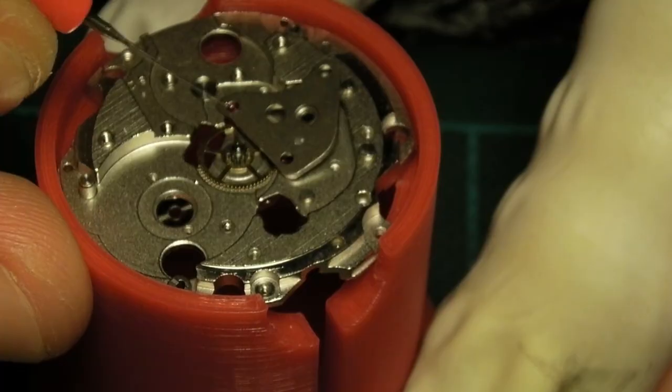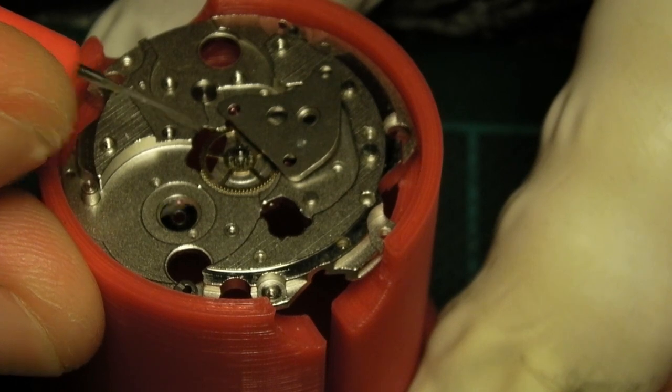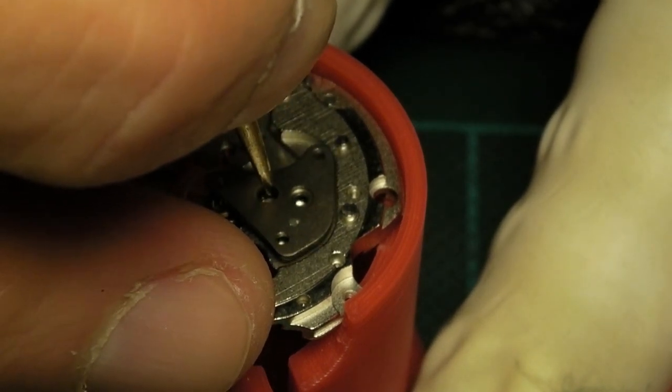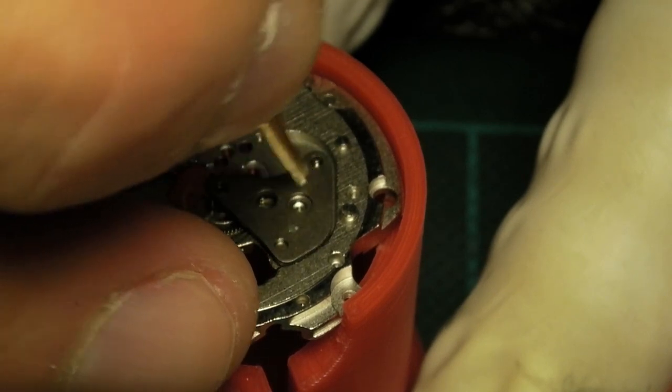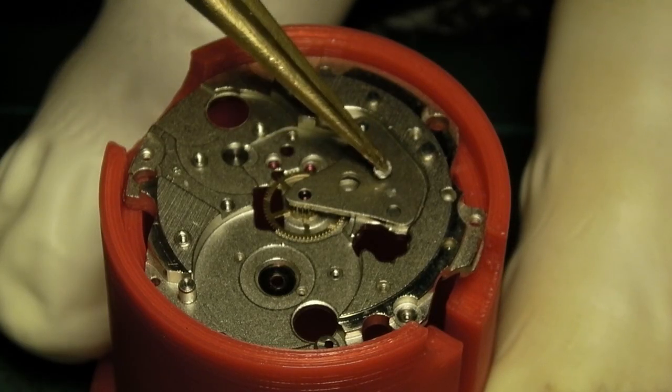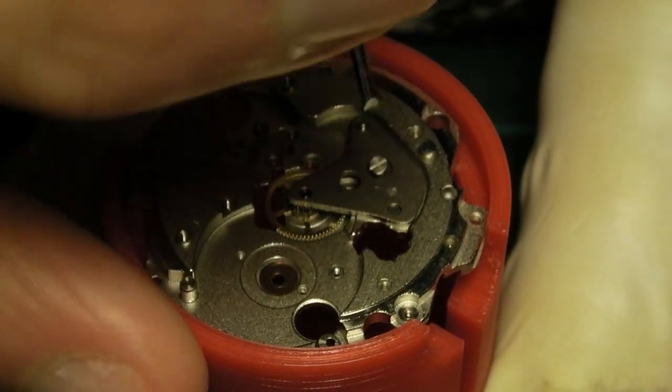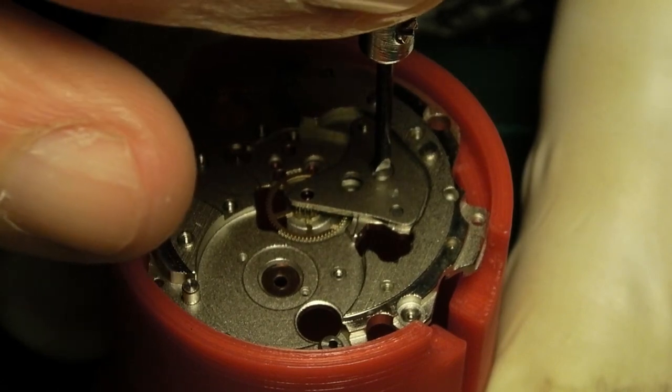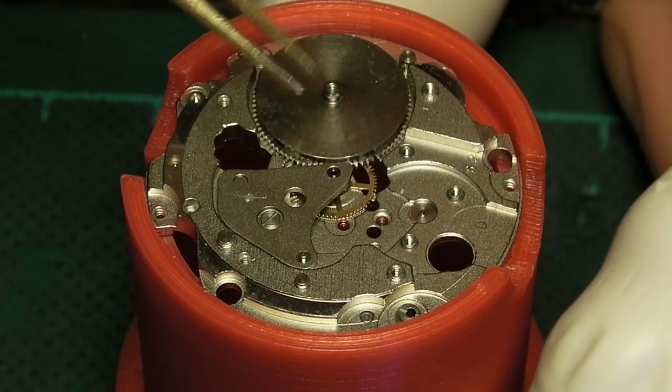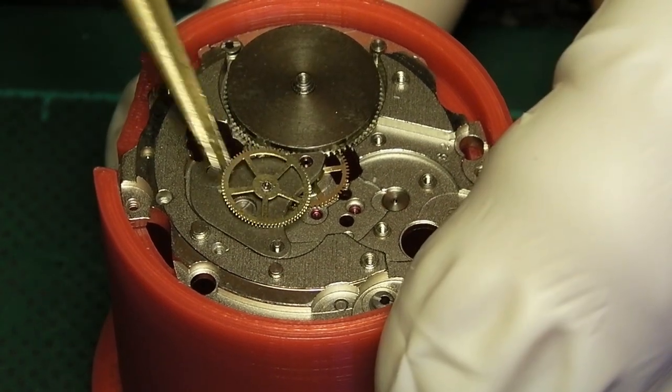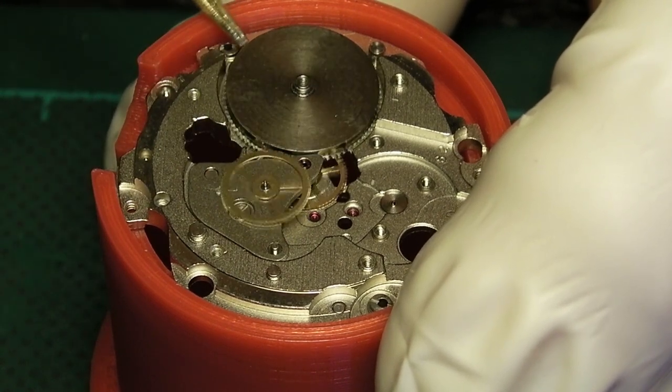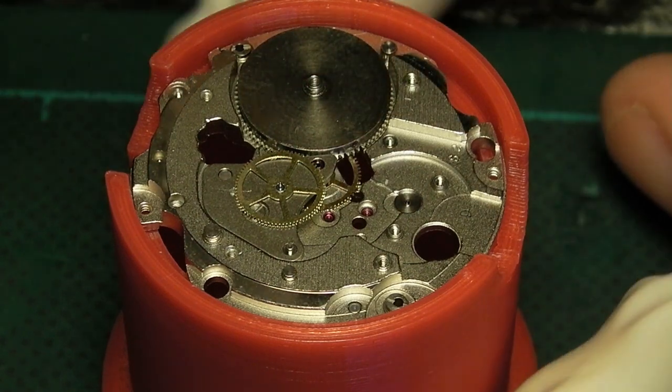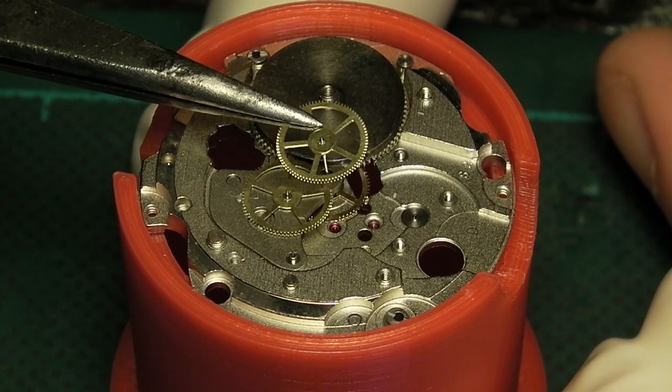We begin with the center wheel, oiling the pivots, and then the center wheel bridge. Hopefully this angle is better than previous ones—I have actually found an old camcorder so the quality might not be quite as good, but it's small enough that I can fit it on the bench in front of me. The cleaned and refitted mainspring and barrel are put in place, and then the third wheel and fourth wheel, lubricating the spindle of the fourth wheel. This is checked for free running.